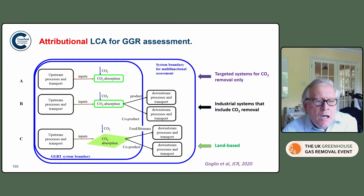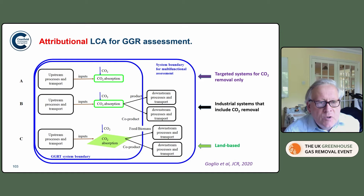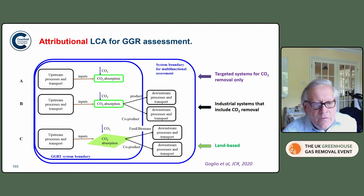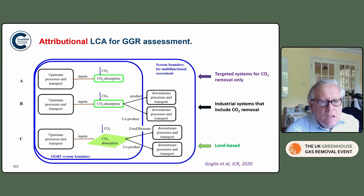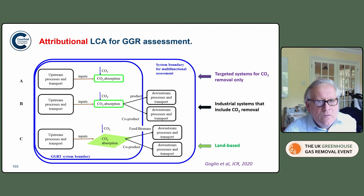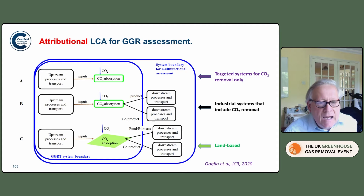This plot shows, simplistically, for three types of system, how attributional LCA works. Traditional LCA within the system is shown by the inner box. The bigger one then includes the consequences of that system. The most linear is for targeted systems just for CO2 removal. Then you've got industrial systems that have other products which include CO2 removal. And then finally, you've got land-based ones where the CO2 removal is much more complicated, but you also have products and potentially ways of removing CO2.